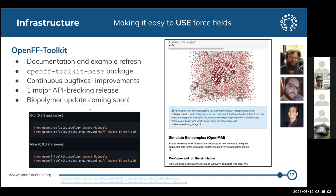We're in the process of developing functionality to load and parameterize proteins using a SMIRNOFF format force field. This is going to be the foundation of our upcoming biopolymer fitting efforts. Some of the code is there; it's still in the prototyping phase, so we're using it internally. Soon the science team will be able to start parameterizing proteins with it. For users, I recommend waiting another few months until this makes it into a stable release.